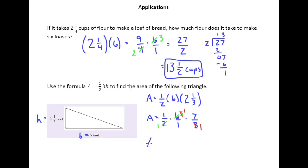One times one times seven is seven. One times one times one is one. And so, we don't leave the answer this way. We say that our area is just seven. And remember, when we're talking area, it's not just feet — it is square feet.